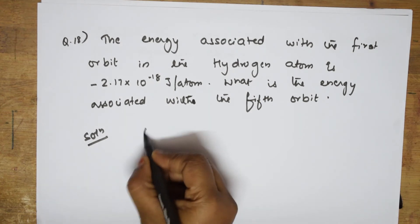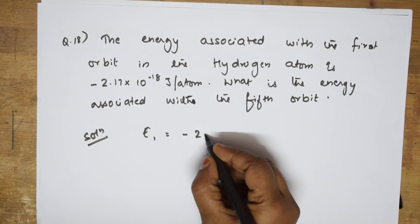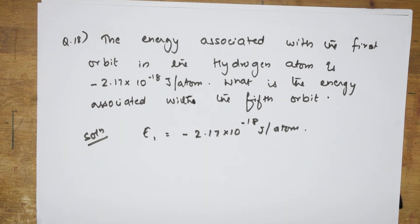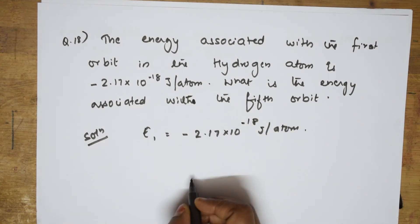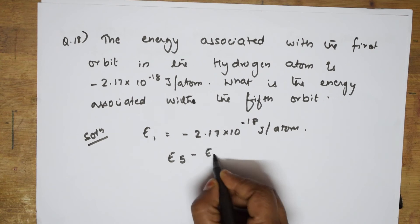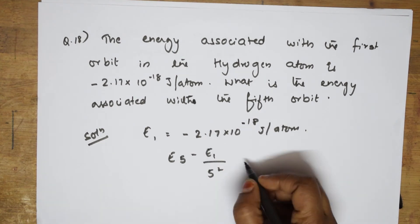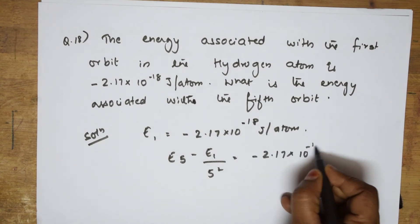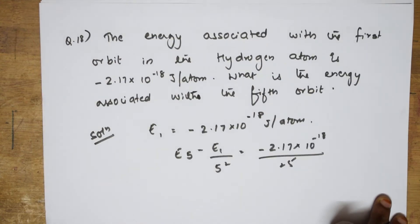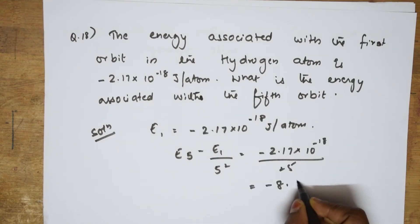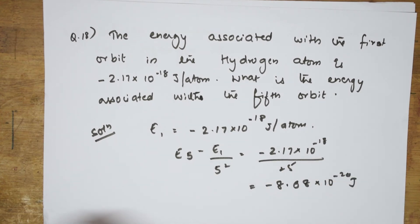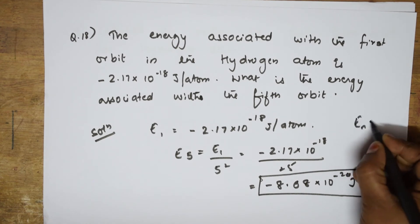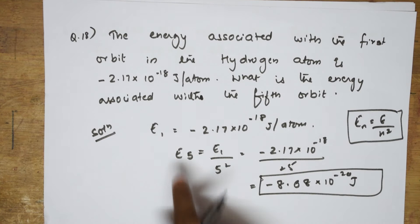What is the energy of the first orbit? E1 = −2.17 × 10⁻¹⁸ joules per atom — that is what they have given. Using En = E1/n², E5 = −2.17 × 10⁻¹⁸ / 5² = −2.17 × 10⁻¹⁸ / 25. Solving this gives E5 = −8.68 × 10⁻²⁰ joules. This is the formula En = E/n², and this is the fifth orbit energy they asked for.